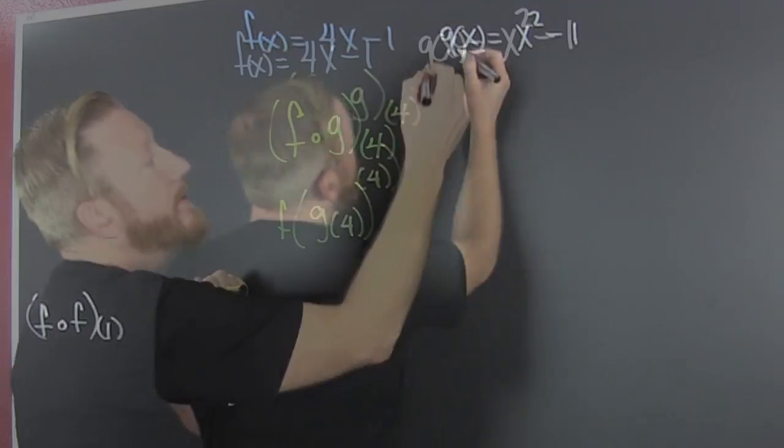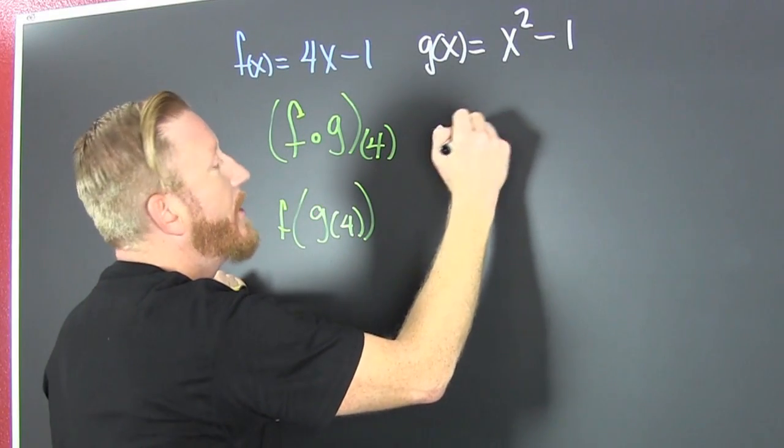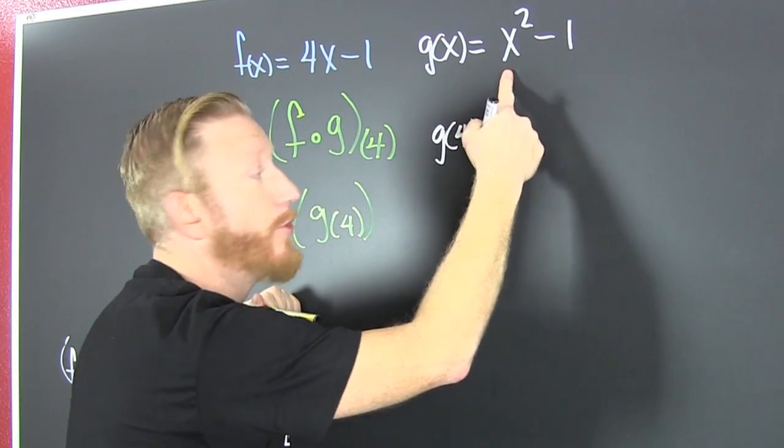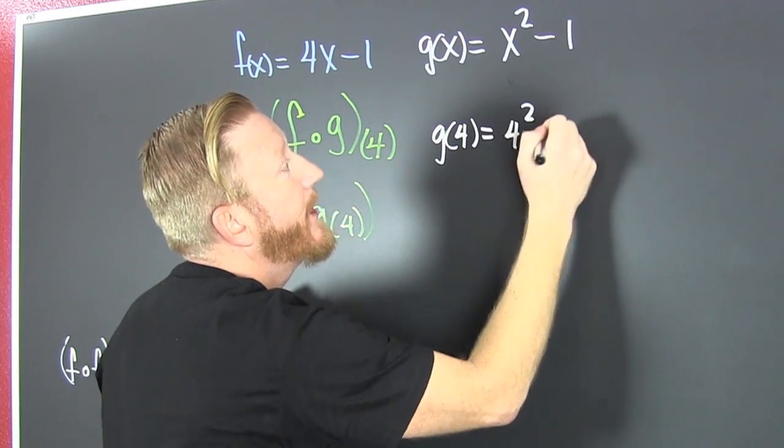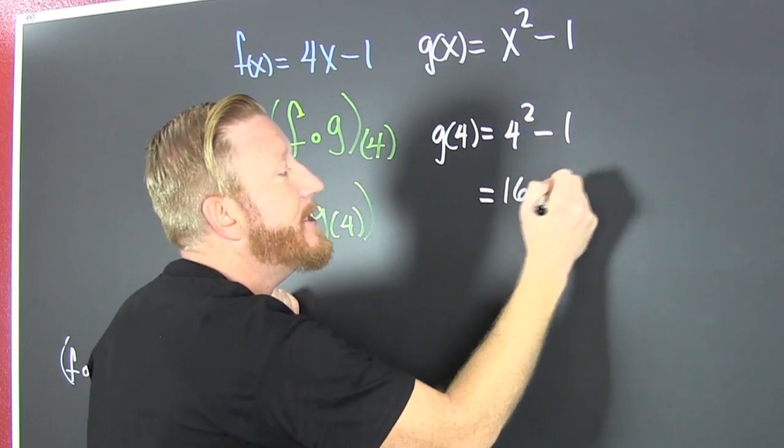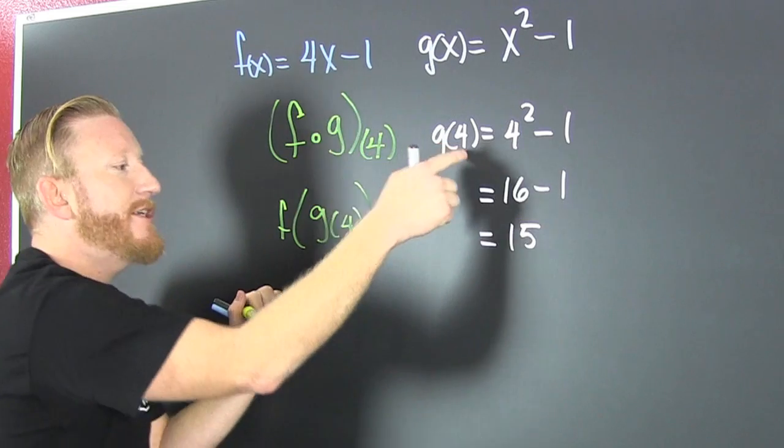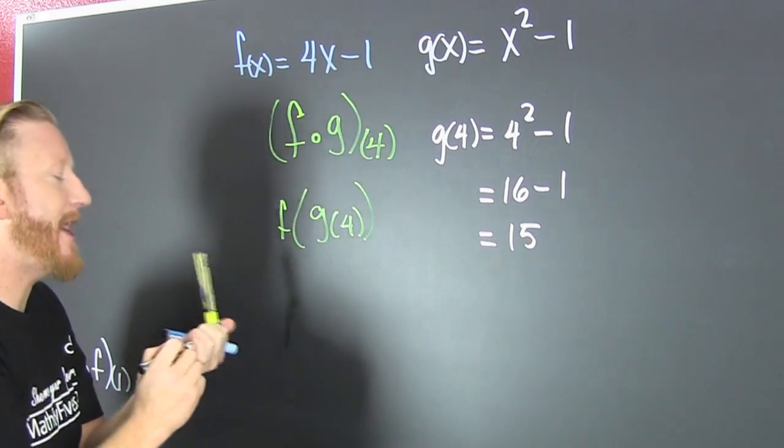So, I look over here and g of 4. That says everywhere I see an x, I put a 4. So that's 4 squared minus 1. That's 16 minus 1. That's 15. So, g of 4 is 15.